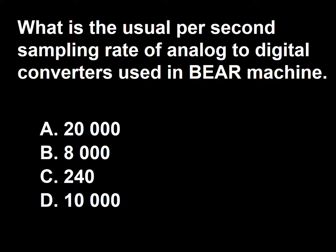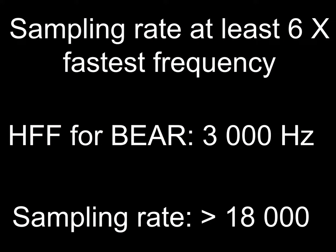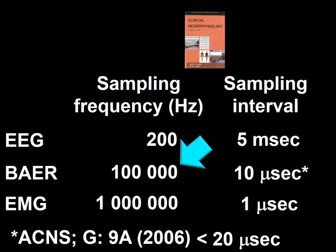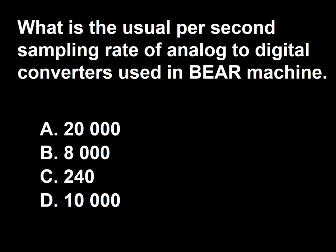Next question: What is the usual per-second sampling rate of an analog-to-digital converter used in brainstem auditory evoked responses? A, 20,000; B, 8,000; C, 240; D, 10,000. Using the six-times rule with a high-frequency filter of 3,000 Hz, the sampling rate should be more than 18,000 samples per second. The recommended sampling rate in Jasper's book is 100,000 samples per second. So the answer to this question is A, 20,000.